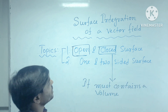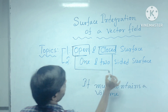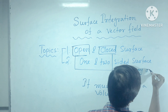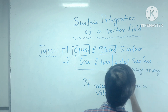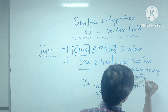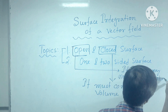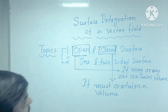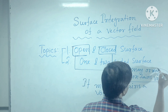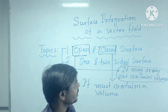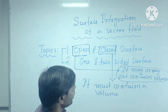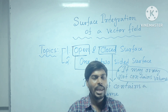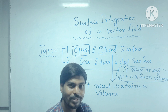Now, what is the open surface? Open surface: it may or may not contain volume. What it means? It means that an open surface sometimes does not contain any volume, and sometimes it may contain volume.